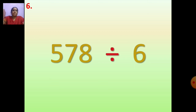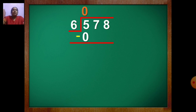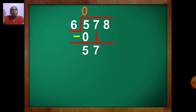Now we will do the last question: 578 divide by 6. Draw the line and write the number inside. 578 divide by 6. Again 6 is big and 5 is small — you cannot divide. So put 0 first. 6 zeros are 0. Draw the line, put the sign of minus. 5 minus 0 is 5. Now bring 7 down — you have 57. Now you can divide. Which number from table of 6 is less than 57? 6 nines are 54. Write 9 up, 54 down.